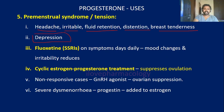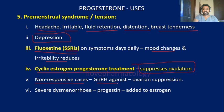To treat mood changes and irritability, fluoxetine — a selective serotonin reuptake inhibitor (SSRI) — can be chosen. Along with that, cyclic estrogen-progesterone treatment is given to suppress ovulation. In non-responsive cases, a GnRH agonist can be used to suppress ovarian stimulation. In severe dysmenorrhea, estrogen can be added to overcome painful bleeding.